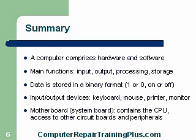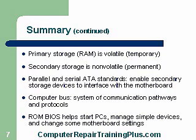Input-output devices include keyboard, mouse, printer, and monitor. The motherboard system, also called the system board, contains the CPU, access to the circuit ports, and peripherals. Primary storage is RAM — it is volatile and temporary, meaning when the power goes off, the memory goes away.